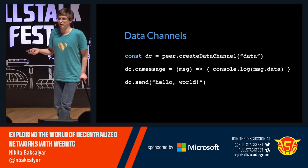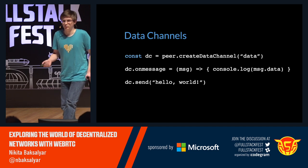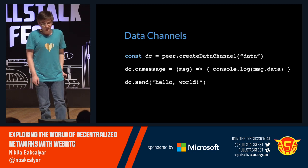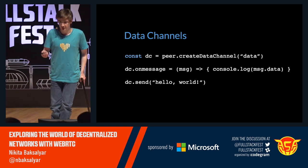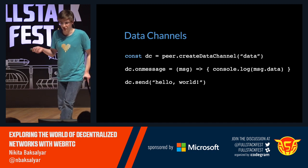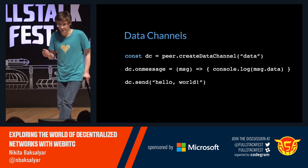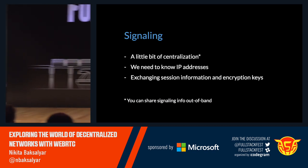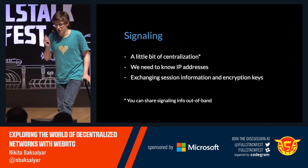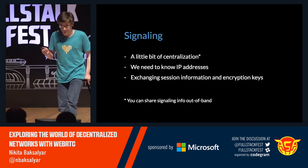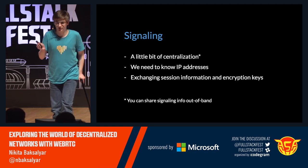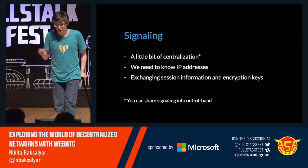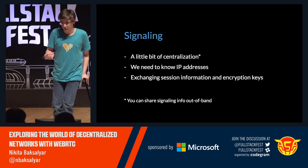So first you just initialize a data channel — a kind of data stream between two peers. Then you can set a hook to handle incoming messages, and then you can send a message yourself. That's basically it. You don't need to worry about security of the data transfer, because when you establish a connection between peers, it automatically initializes session encryption keys. Data encryption is mandatory in WebRTC, so Mallory can't tap into your communications. You just need to make sure that you transfer the session information securely, and you do that with signaling.